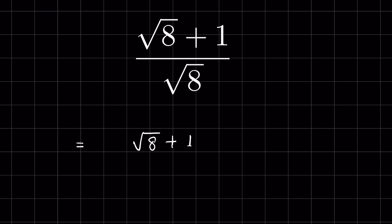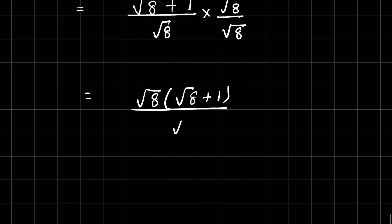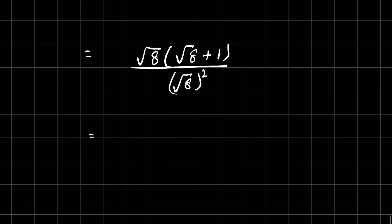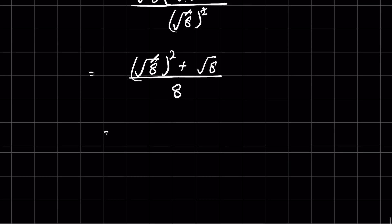So: square root of 8 times square root of 8 squared, plus square root of 8 times 1 is square root of 8, upon — removing the square root with the square — gives us 8. So the expression becomes 8 plus square root of 8 upon 8.